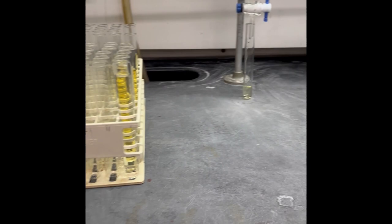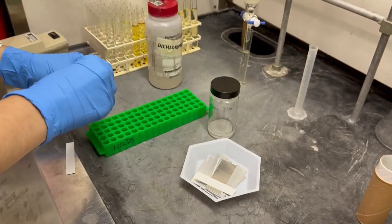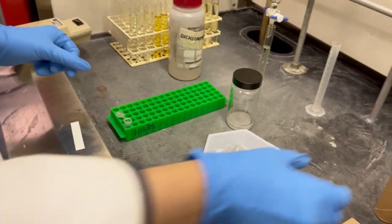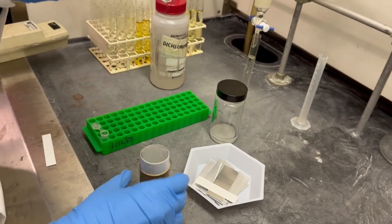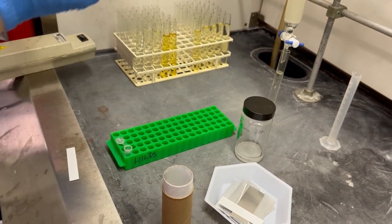The next crucial step is to identify which fractions contain the product. As mentioned earlier, we use TLC to determine the composition of the eluents or fractions. This step is done during collection and it does take some practice to coordinate it all.